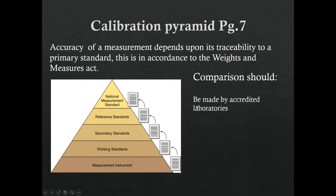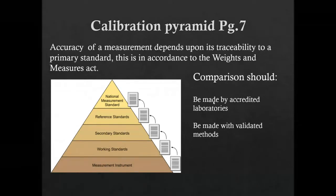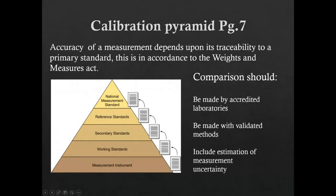Importantly, comparisons should be made by accredited laboratories — Measurement Canada will tell you who is and isn't accredited. Comparisons must be made with validated methods — proper procedures — and must include an estimation of measurement uncertainty, that plus-or-minus value we hold it to.